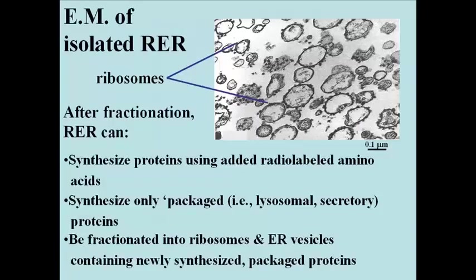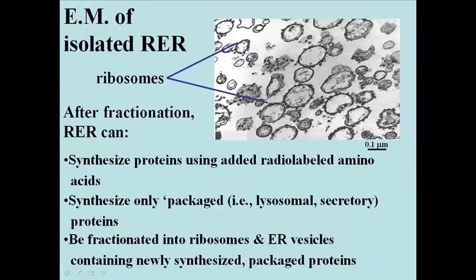This slide shows a TEM image of isolated vesicles from a cell fractionation. Because the vesicles are studded with particles that are about the same dimensions as ribosomes, it's reasonable to suspect them of being RER vesicles. If they are, then you should be able to predict some activities of such an isolate. Specifically, these structures in the test tube should be able to synthesize radioactive proteins using radioactive amino acids. They should contain proteins found in Golgi vesicles, lysosomes, or perhaps cellular secretions, but not proteins found in the cytoplasm or associated with other organelles like mitochondria, chloroplasts, or nuclei. In fact, isolates like these meet these criteria and are clearly RER.